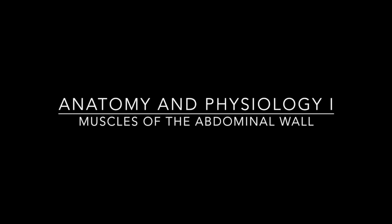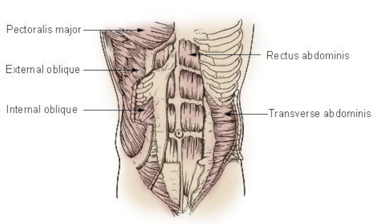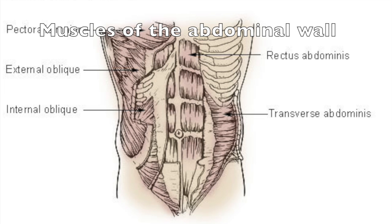Anatomy and Physiology 1: Muscles of the Abdominal Wall. The abdomen is supported by four layers of abdominal muscles: the rectus abdominis, external oblique, internal oblique, and the transverse abdominis.